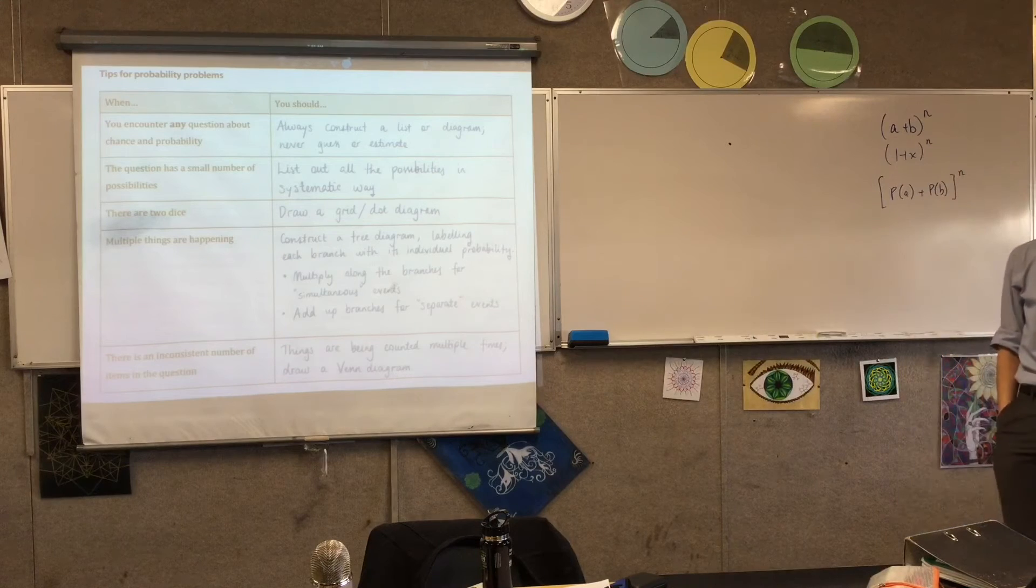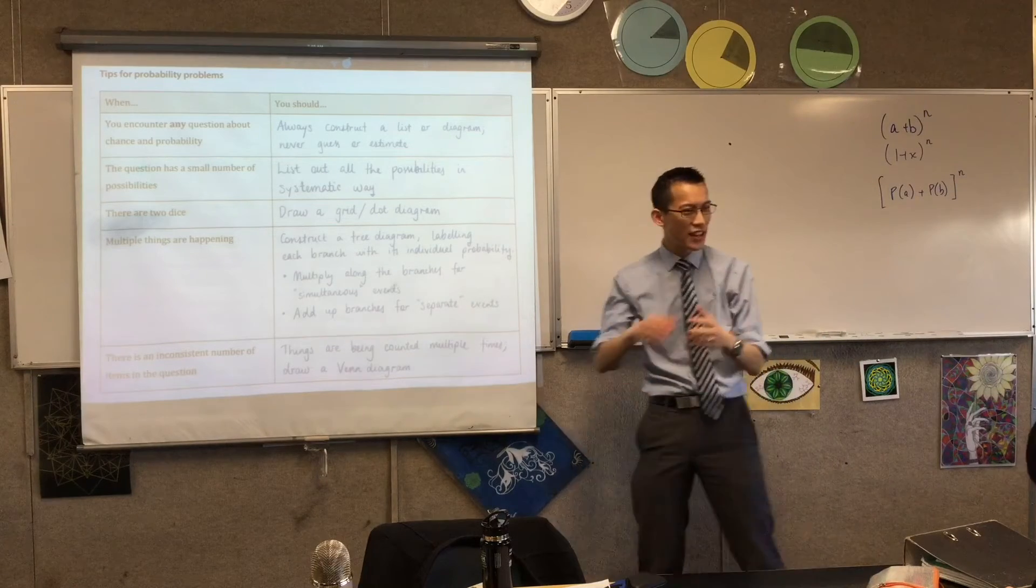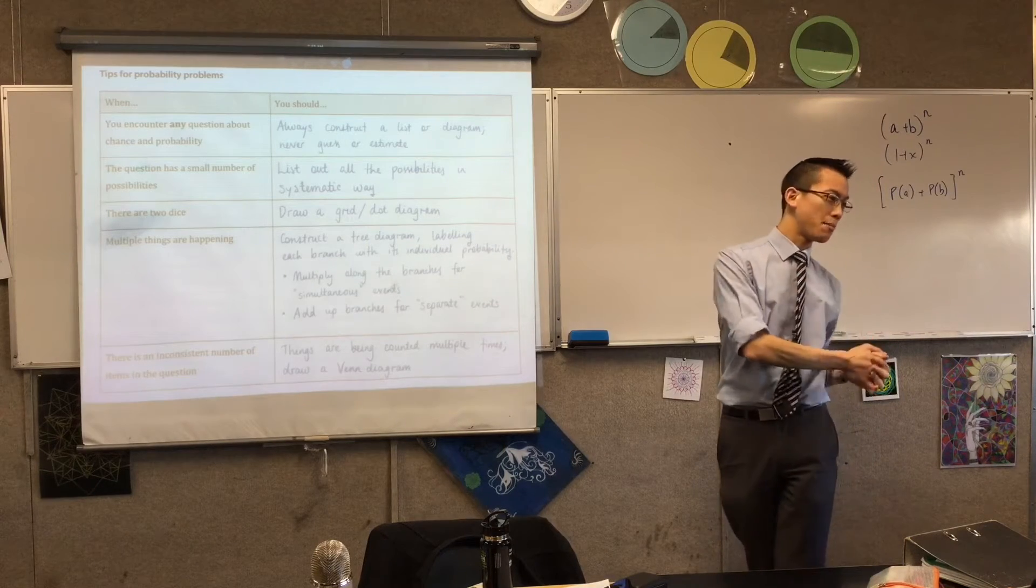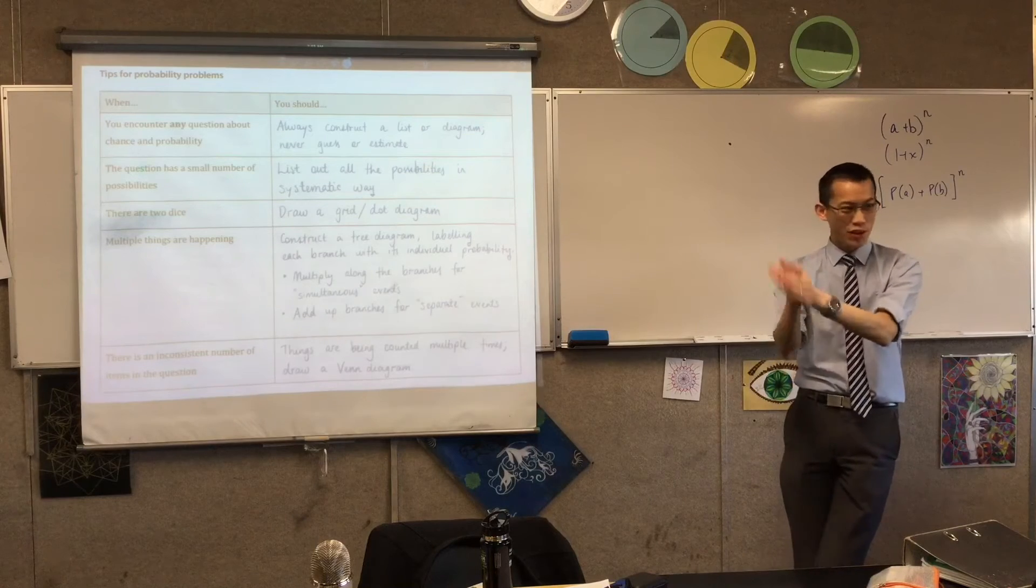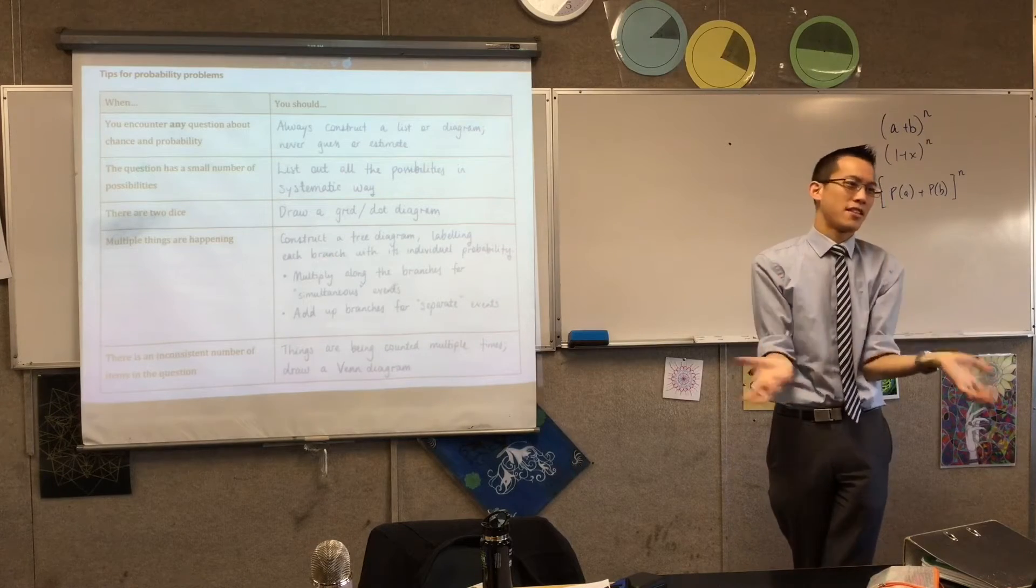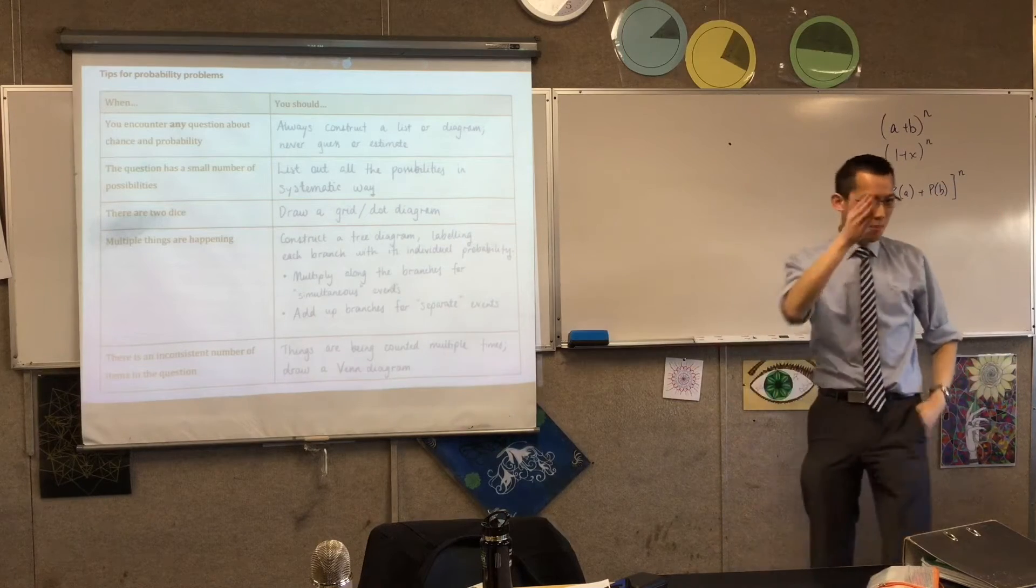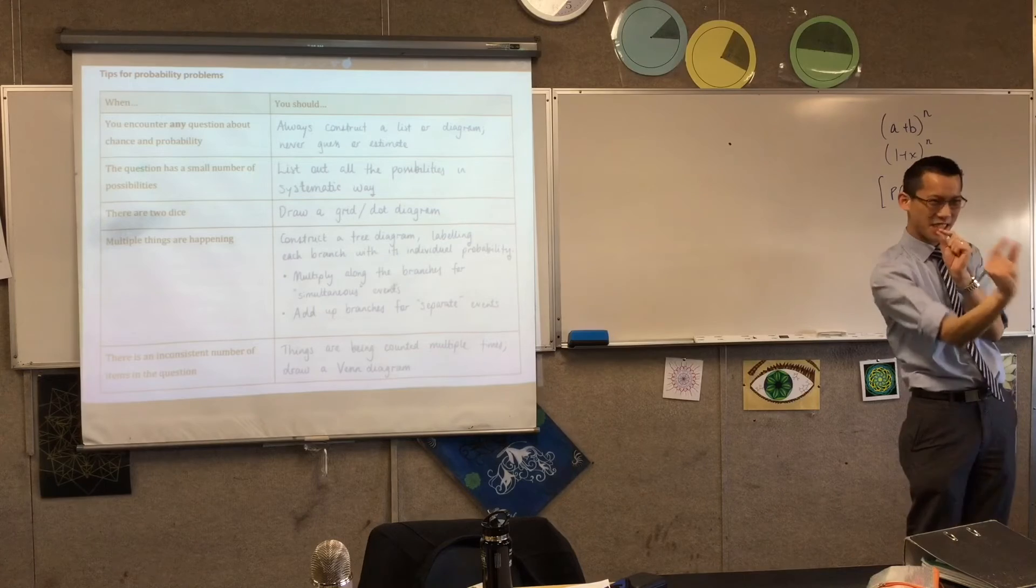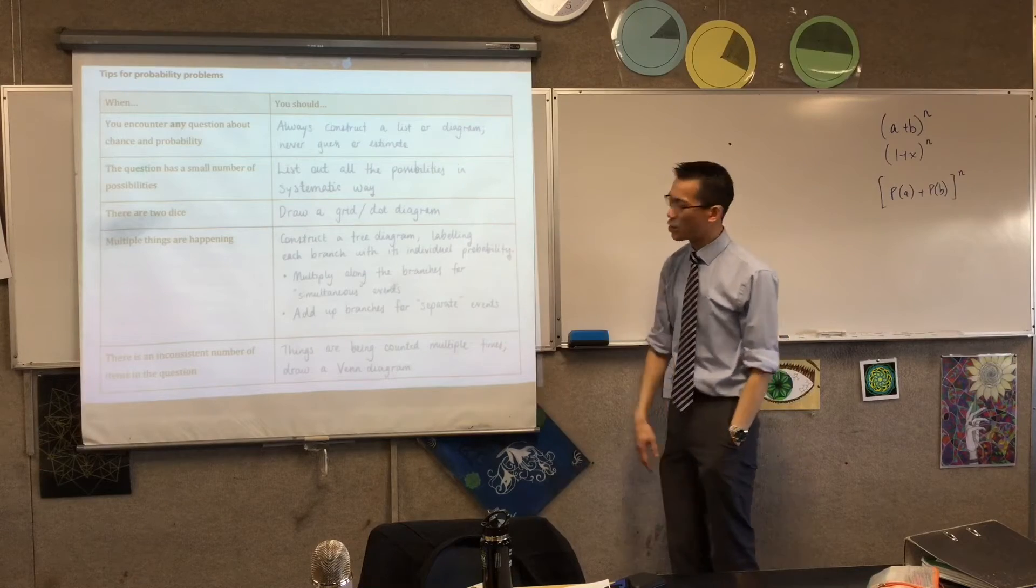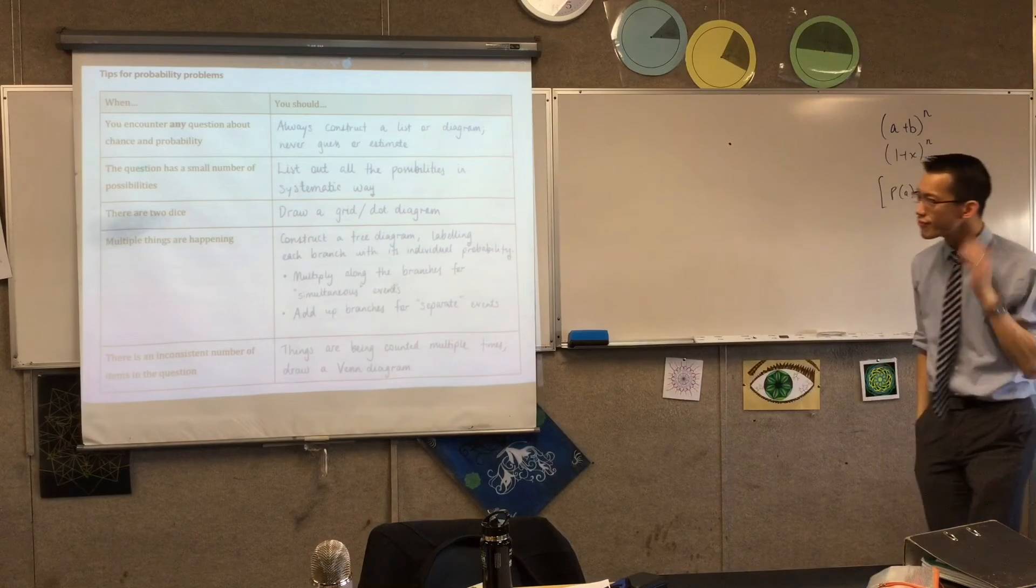A disproportionate number of probability questions have to do with a pair of dice because they're so easy to work with. It's kind of like that sweet spot. If you think about polynomials, linear functions are super boring, cubic polynomials are really hard. But quadratics, degree two, it's this really nice spot in the middle where it's challenging but accessible. And two dice are exactly like that. So the way to do two dice questions is always with a dot diagram or with a grid, and I'll show you how to construct one of those.